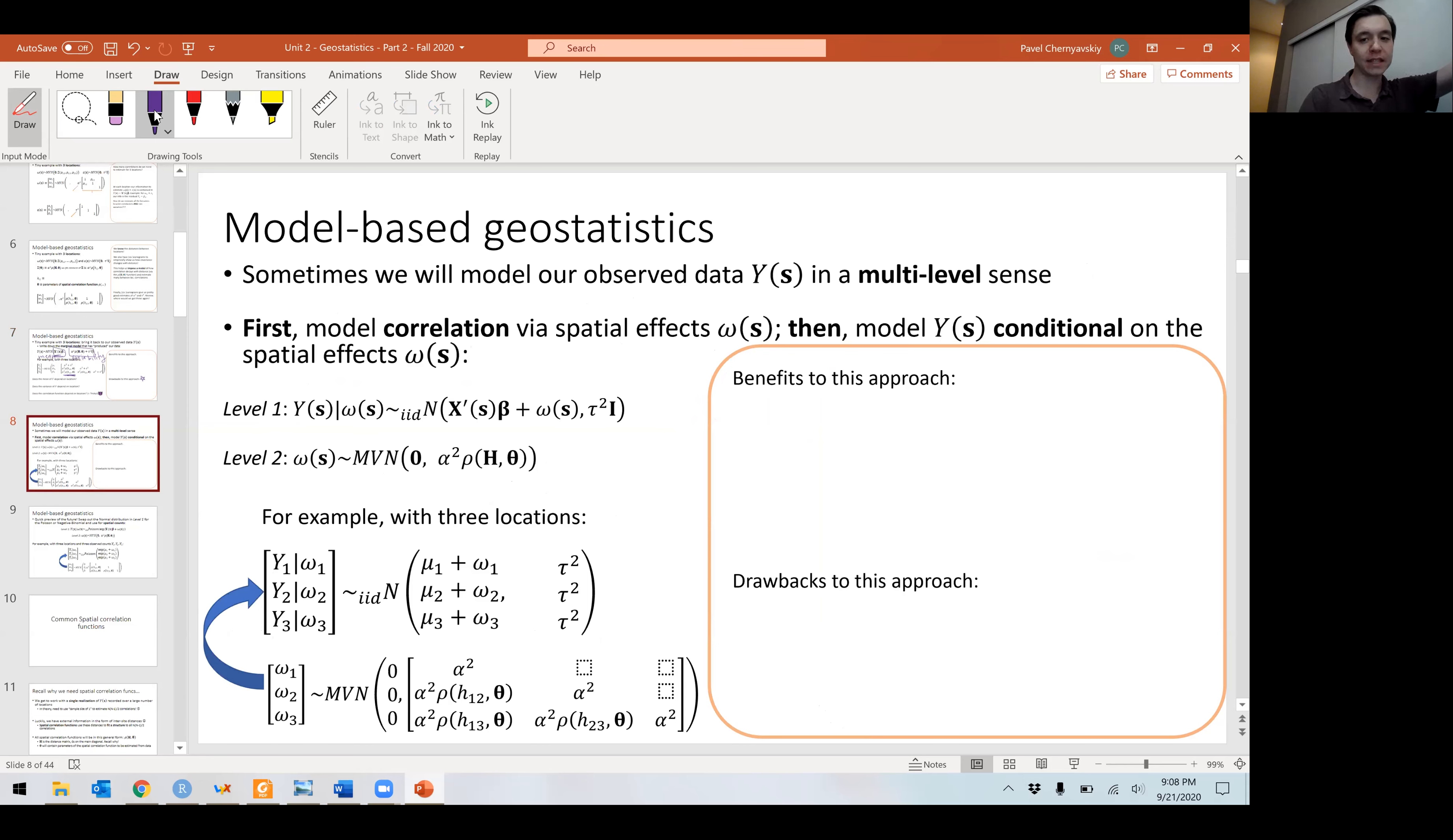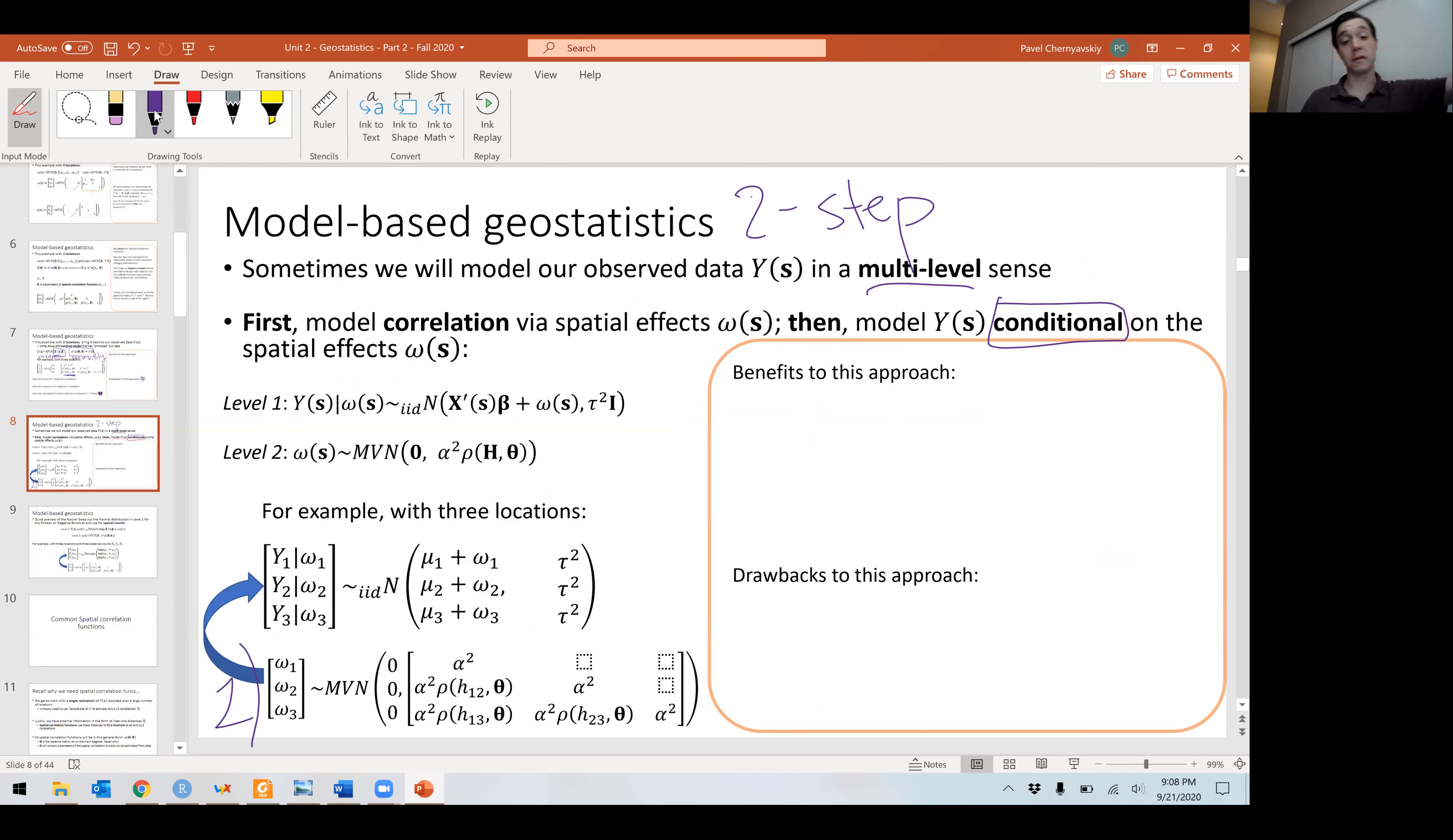So how do we do it? Well, we can think of this in a multi-level sense. This is called the conditional model. That's when you take a two-step approach. Think of it as a two-step approach where you first model the spatial effects and then you plug them in and model the process for the data. So what you actually observe is the data, not the spatial effects. But you break your modeling exercise into two steps.